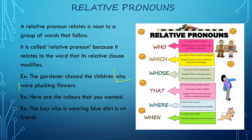Next example: here are the colors that you wanted — joining two sentences with a relative pronoun. Also: the boy who is wearing a blue shirt is my friend. If we break this into two sentences: the boy is wearing a blue shirt, and he is my friend. We have joined these two sentences using the word who.